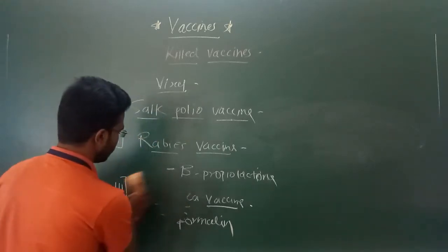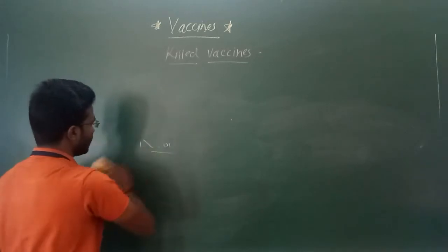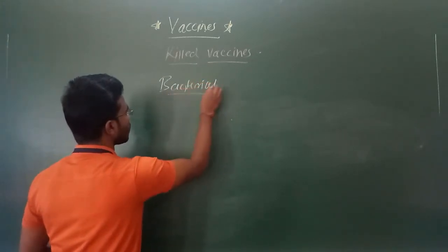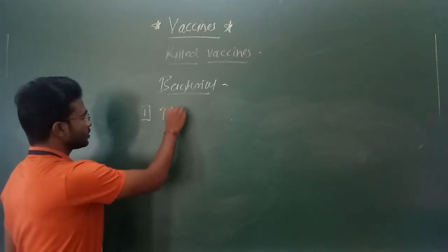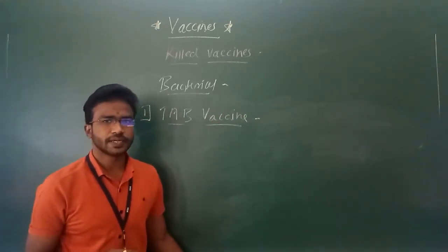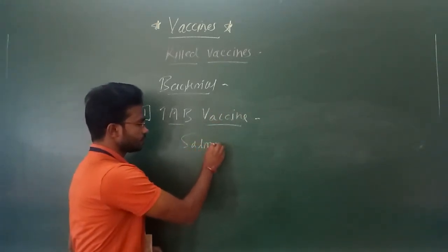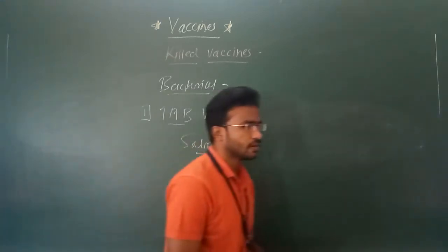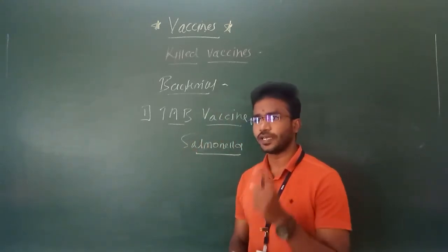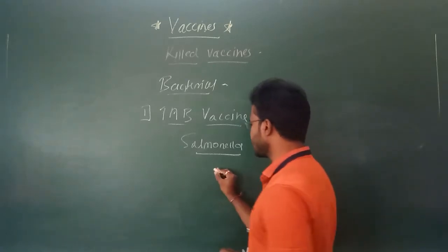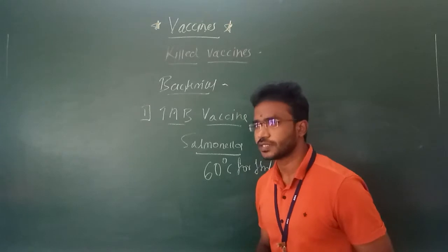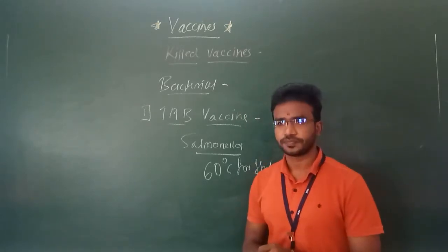Next are bacterial killed vaccines. The first example is the TAB vaccine, which is most commonly used against Salmonella species. This TAB vaccine is an example of a heat-killed vaccine, in which heating is done at 60 degrees Celsius for one hour. So, one hour of heating at 60 degrees Celsius prepares the TAB vaccine.